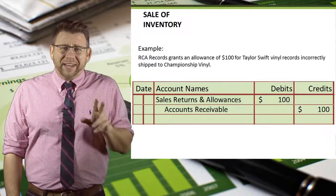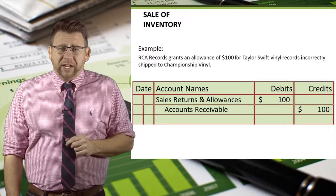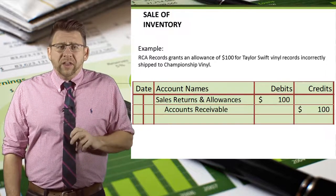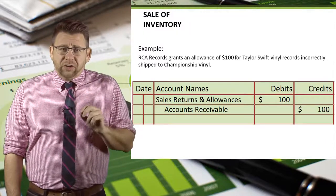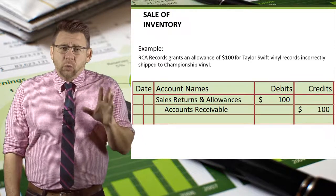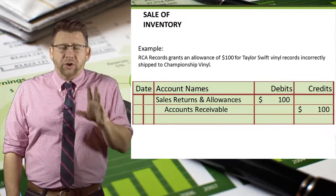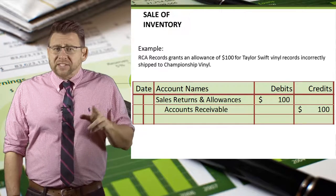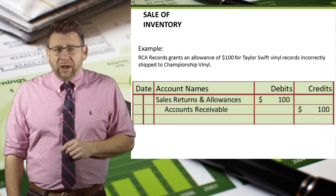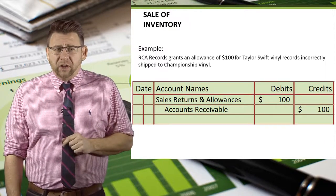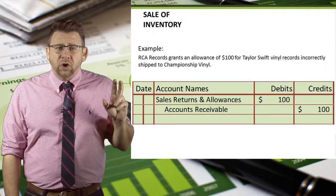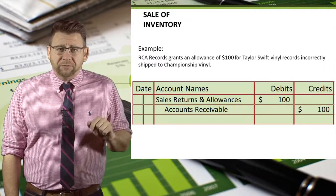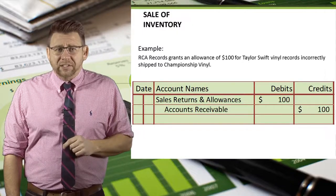Had RCA Records granted Championship Vinyl an allowance of $100 instead of accepting the return, then only the revenue journal entry is impacted, because no records are being returned to inventory stock. In this case, we would debit sales returns and allowances and credit accounts receivable for $100. There is no journal entry for cost of goods sold and inventory when there is a sales allowance.